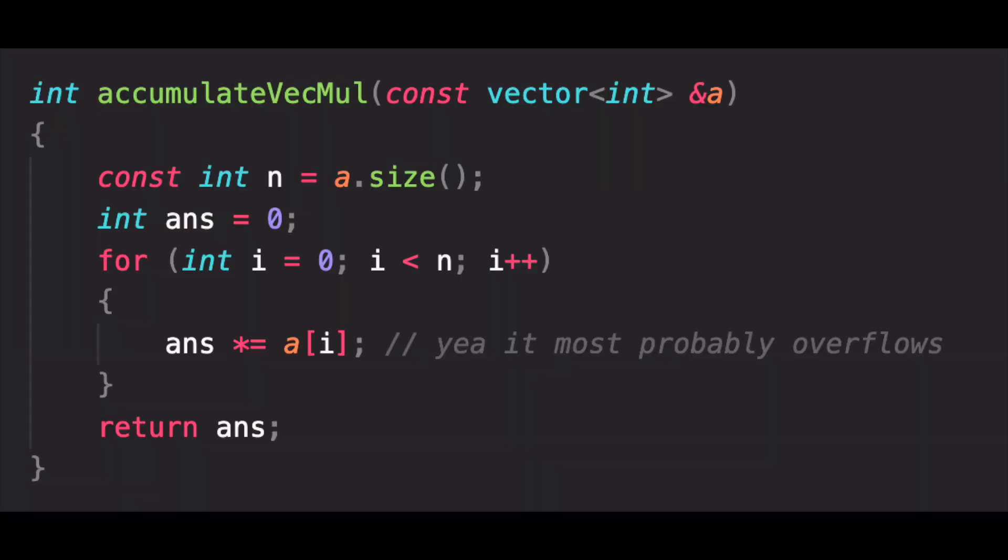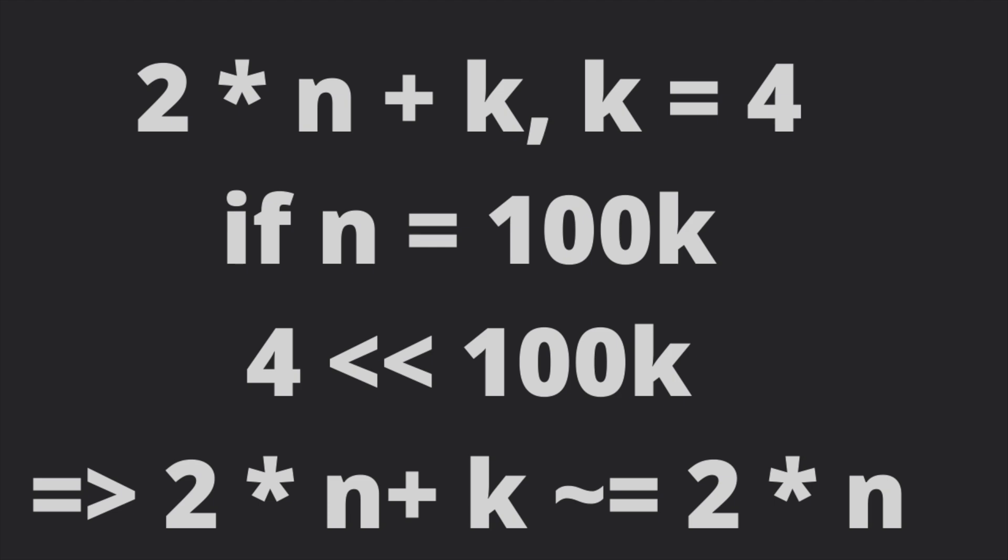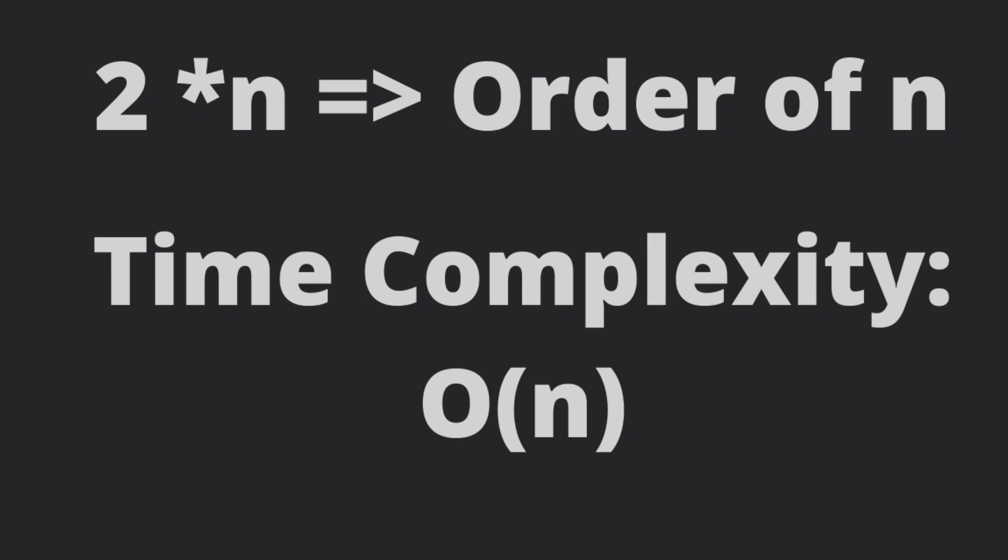Now, if I had written similar code, but this time with multiplication, this also takes n plus k instructions. And so, with big N, k becomes negligible and our time complexity is again big O of n.